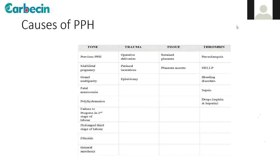Causes of PPH involve the four T's. Tone: previous PPH, multi-fetal pregnancy, grand multiparity, fetal macrosomia, polyhydramnios, failure to progress in second stage, prolonged third stage, fibroids, and general anesthesia. Trauma: operative deliveries, perineal lacerations, episiotomy. Tissue: retained placenta, placenta accreta syndrome (PAS) — now more common due to rising cesarean rates. Thrombin: preeclampsia, HELLP syndrome, bleeding disorders, sepsis leading to DIC, and drugs like aspirin or heparin.